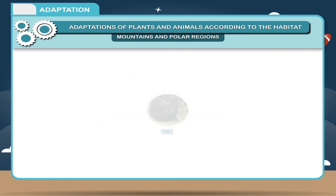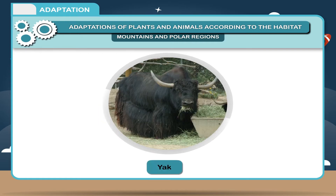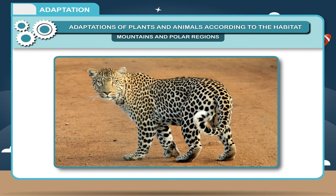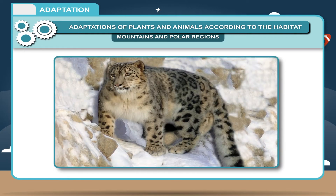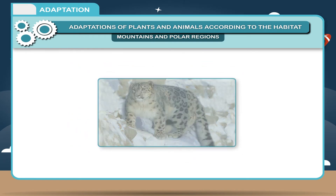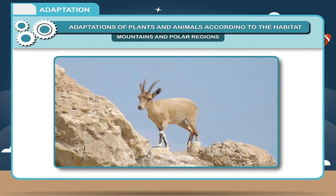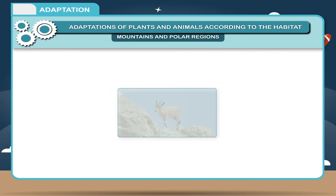For example, yak has long hair to keep warm. Snow leopard has thick fur on its feet and toes. This protects its feet from the cold when it walks on the snow. The mountain goat has strong hooves for running up the rocky slopes of the mountains.